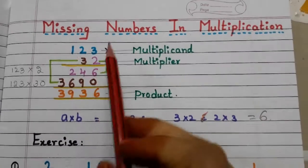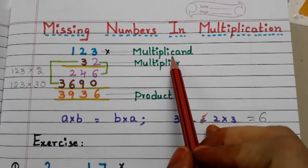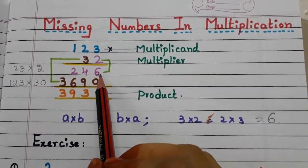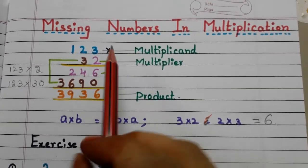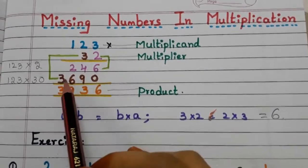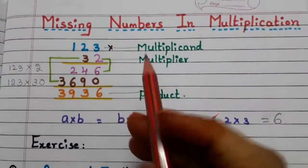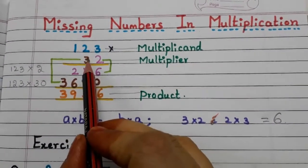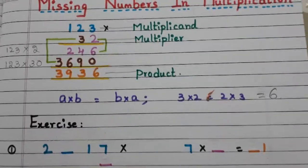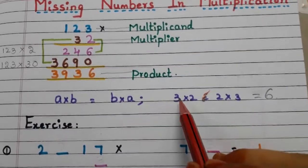Here we have a multiplication example. 123 is known as the multiplicand and 32 is called the multiplier. The first line is what we get when we multiply the multiplicand with the ones digit of the multiplier, and the second line is what we get when we multiply with the tens digit. The final result is the product. Also note that a × b = b × a, so 3 twos are 6 and 2 threes are 6.